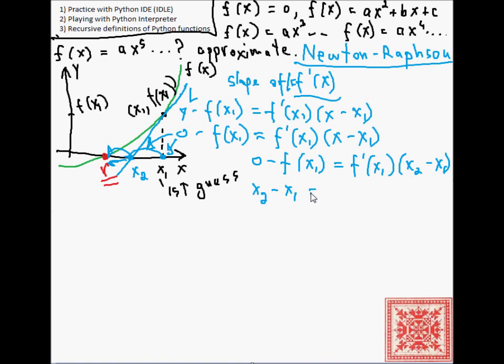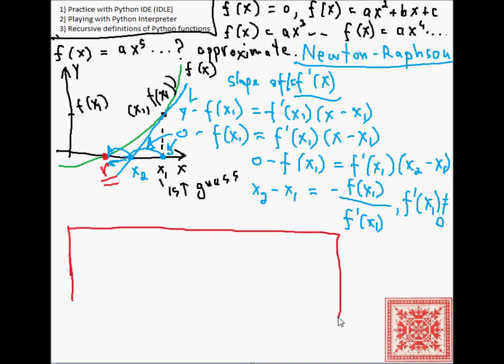So, x2 minus x1 is equal to negative f of x1 over derivative of f at x1. Assuming that derivative of f at x1 is not equal to 0. And we can generalize this, and this is known as the Newton-Raphson method.